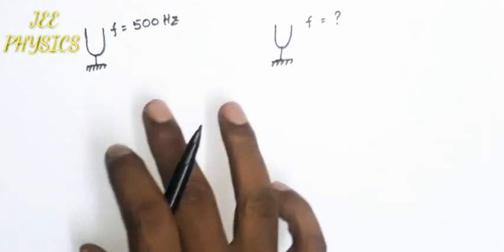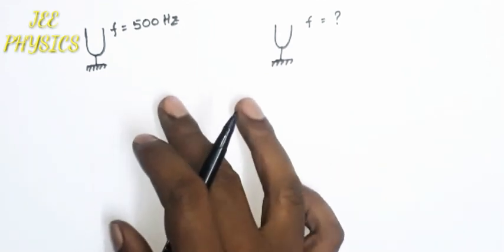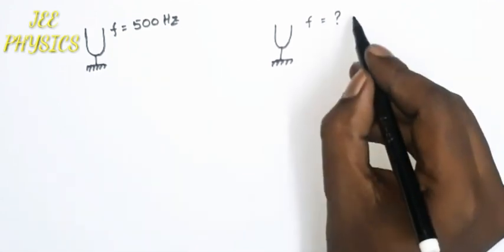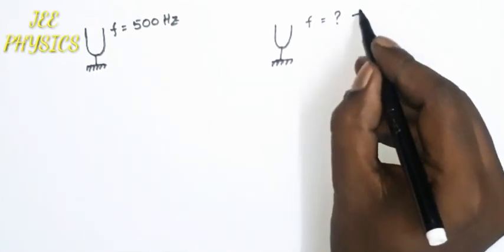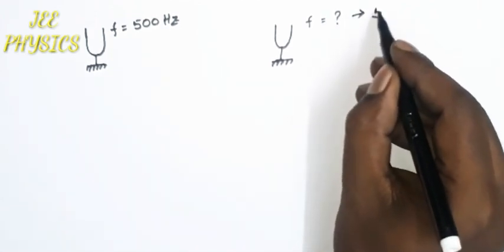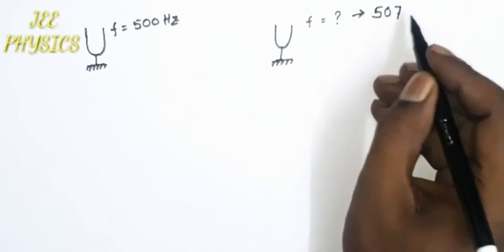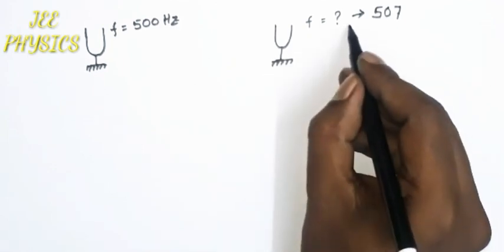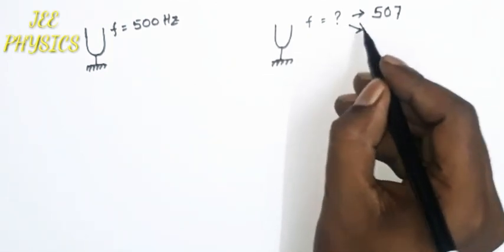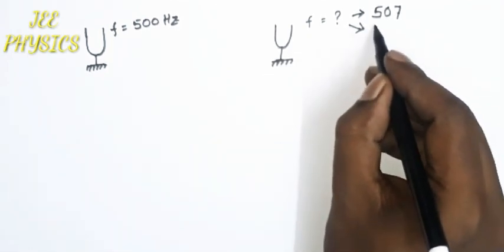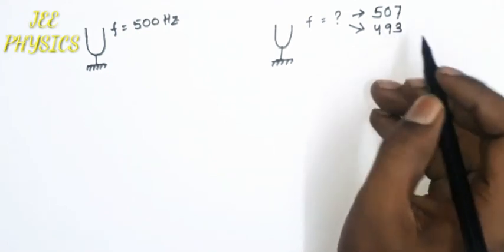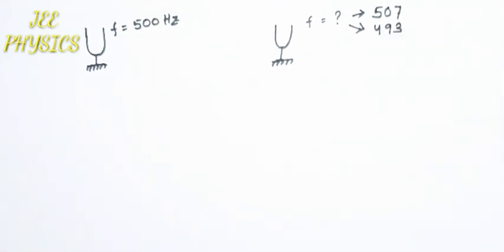Now if the number of beats per second is seven, then we have two possibilities. One is that the frequency of the unknown is 507, since the difference of the two frequencies equals the number of beats, and it may also be 493. Now what should be the answer?